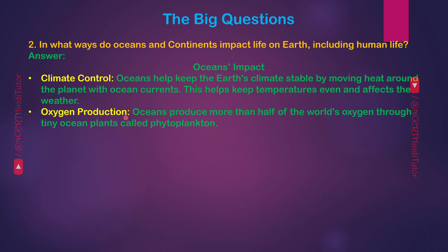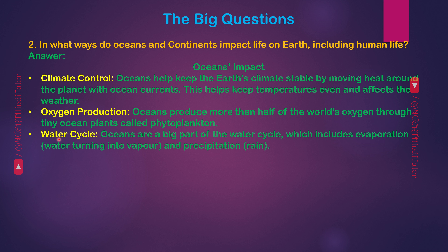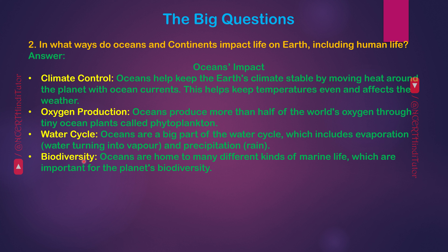Next, oxygen production: oceans produce more than half of the world's oxygen through tiny ocean plants called phytoplankton. Next, water cycle: oceans are a big part of the water cycle, which includes evaporation — that is, water turning into vapour — and precipitation, i.e., rain. Next, biodiversity: oceans are home to many different kinds of marine life.